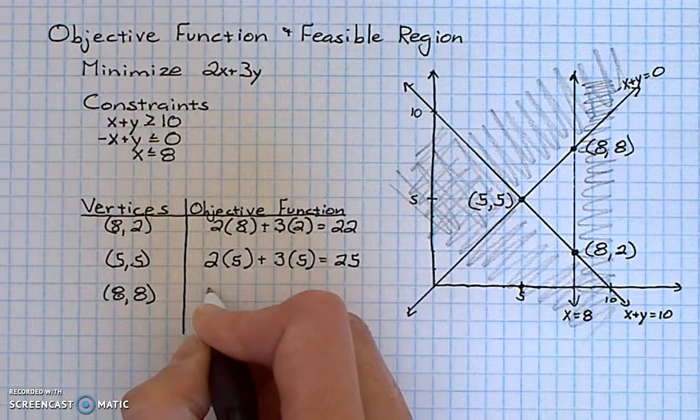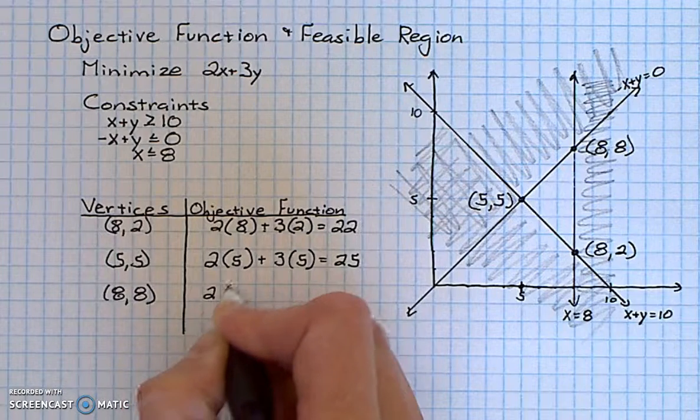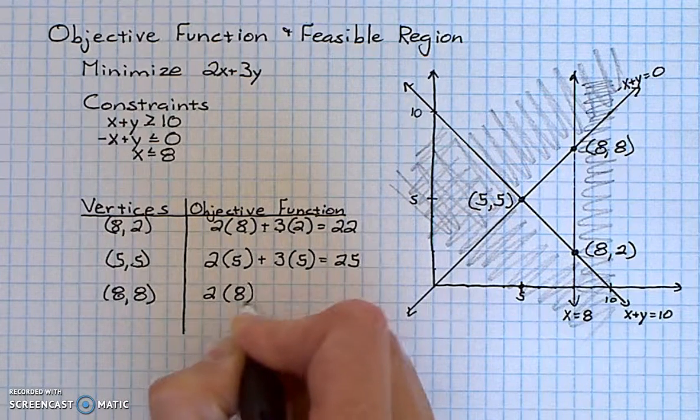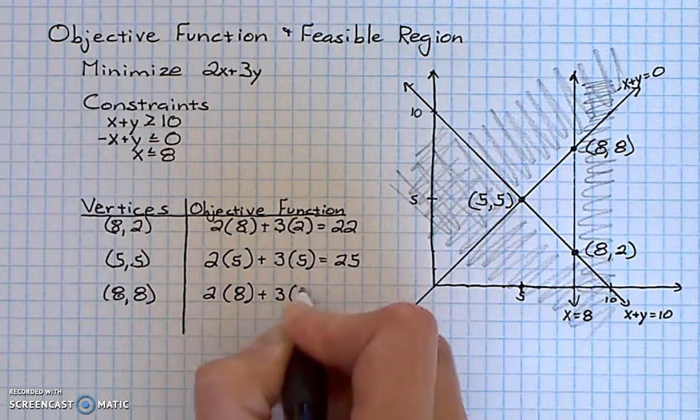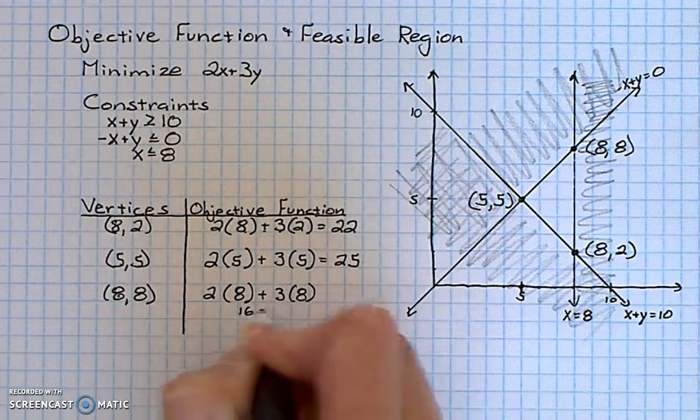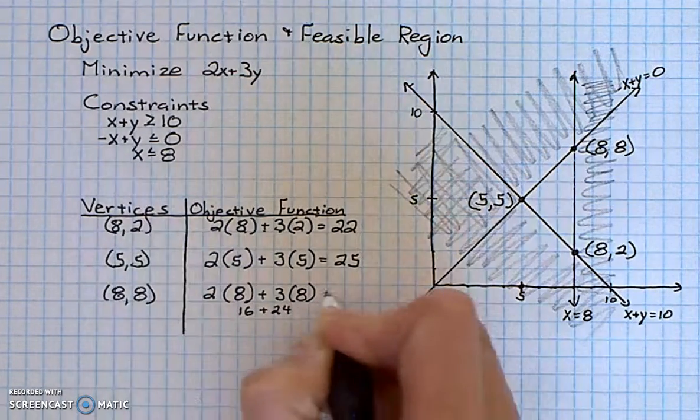I take my last vertex which is 8, 8. I substitute those values into the objective function. I'd have 16 plus 24 which is 40.